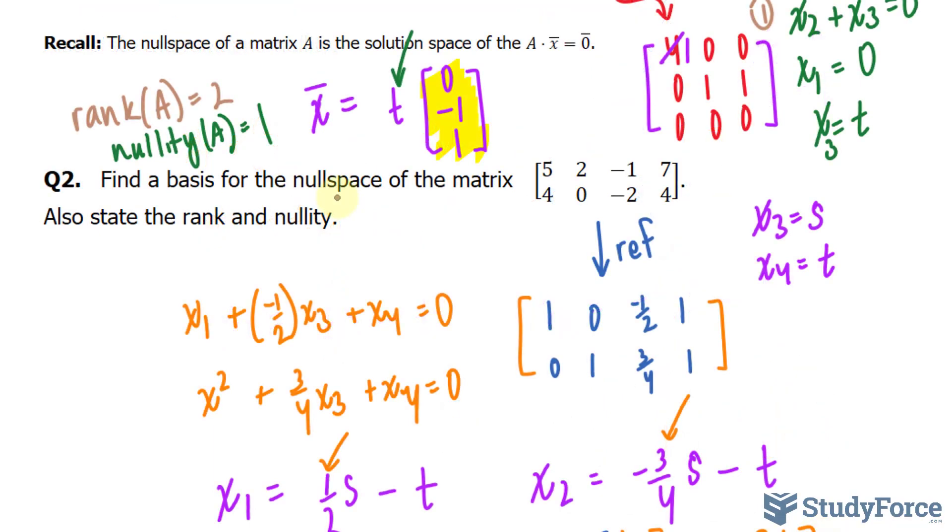The last part of this question asks for the rank and the nullity. We had two leading ones. So the rank of this matrix, let's call it b this time, is equal to 2. And the nullity given that we have two parameters is equal to 2 for s and t.